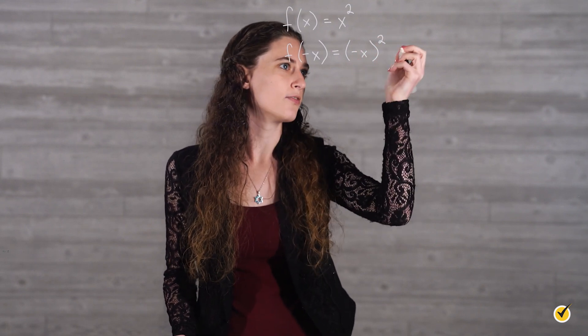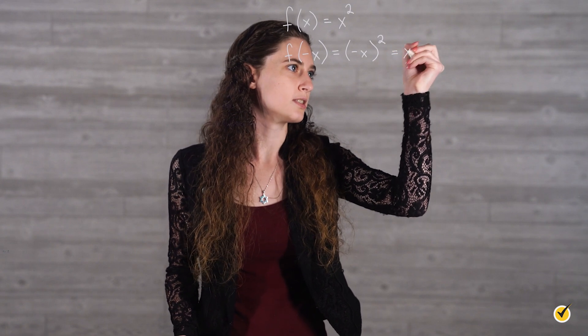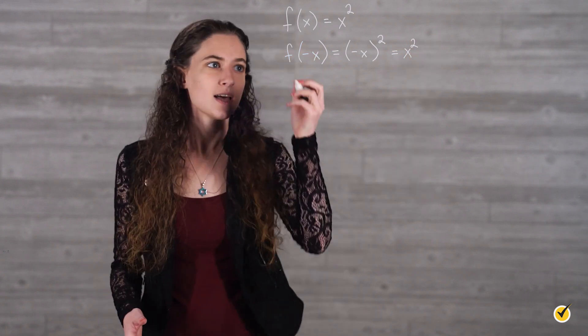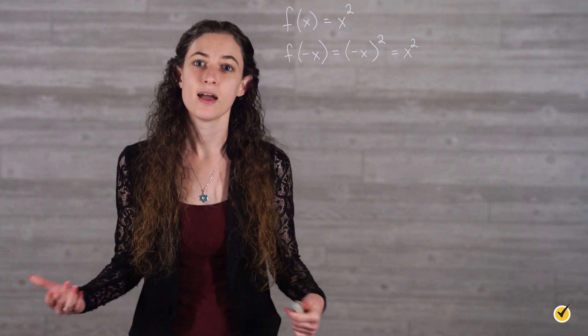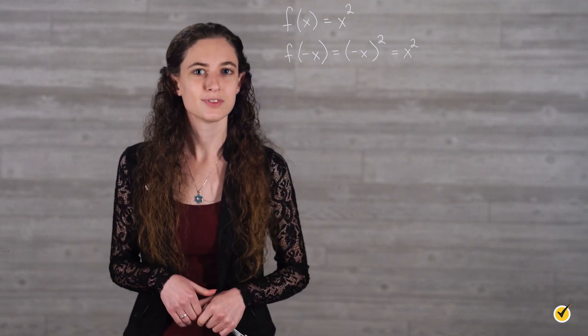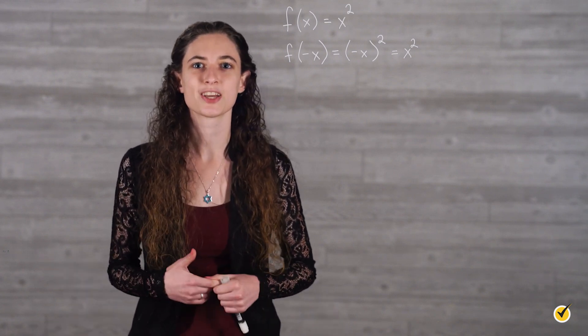When you square a negative, it turns positive. So this is equal to x squared. So in this case, f(-x) is equal to f(x). And because of our definition of even, this function f equals x squared is even.